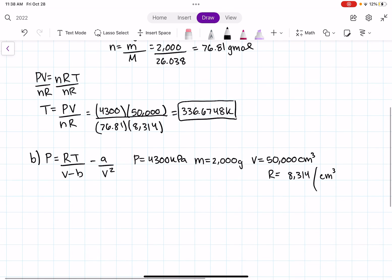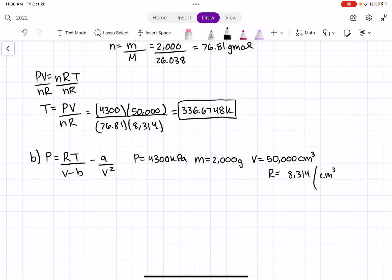And again, if you have any confusion as to why we picked these values, it's because they match our R value. That I more thoroughly explained in the first question, A, where we did it with the ideal gas equation. So let's continue. Kilopascals, gram, mole, kelvin. Great.